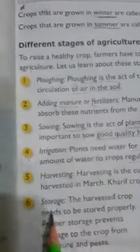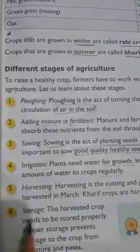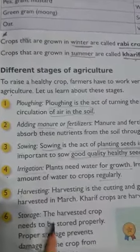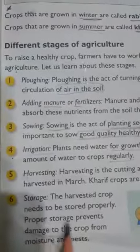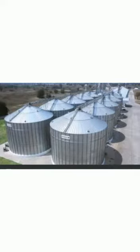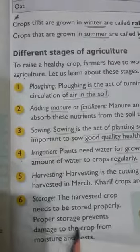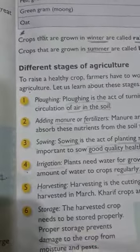The last stage is storage. After harvesting, the harvested crop needs to be stored properly. Proper storage prevents damage to the crop from moisture and pests. They will be stored in tanks, as you can see in the picture, so that animals or insects do not eat those crops.